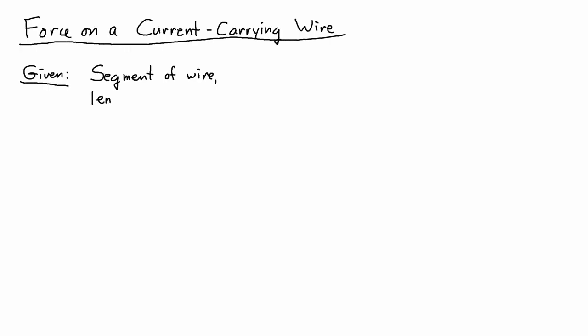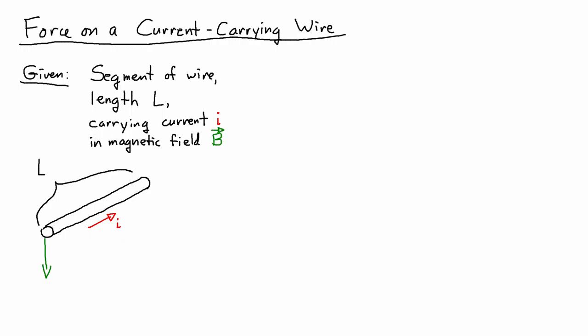The basic idea is that we're given a segment of wire of length L carrying a current I in a magnetic field B, and we have to find the force on that wire, the magnetic force on that wire.